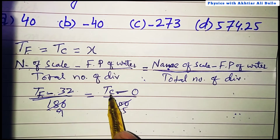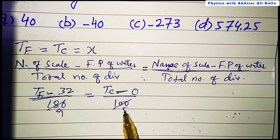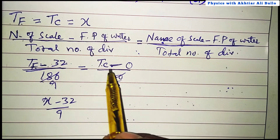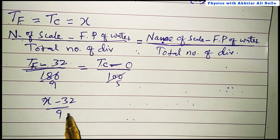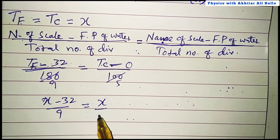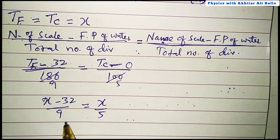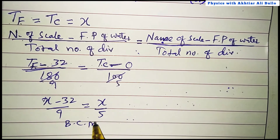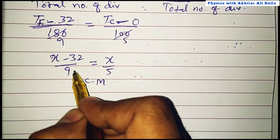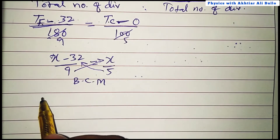So the formula becomes: (F − 32) / 9 = C / 5. Since both temperatures are the same value x, we substitute x for both Fahrenheit and Celsius: (x − 32) / 9 = x / 5.